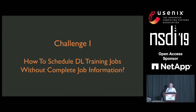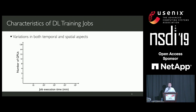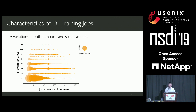Next, let's see how our system can schedule deep learning jobs without complete job information. To design a scheduler, we need a good understanding of those training jobs. We gathered job information from a 10-week job trace in a production cluster and found huge variations in both the temporal and spatial aspects. This figure shows the distribution in terms of job execution time and GPU requirement. Each circle represents a group of jobs with the same execution time and GPU requirement, and the area of the circle represents the number of jobs in that group.